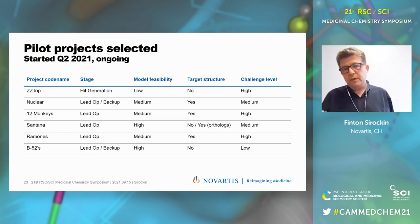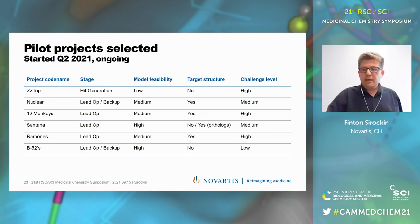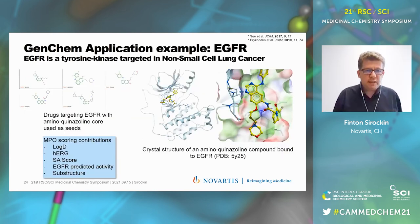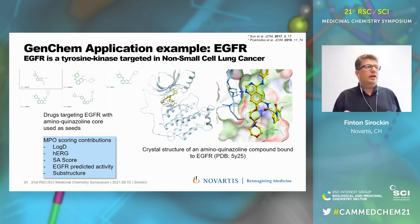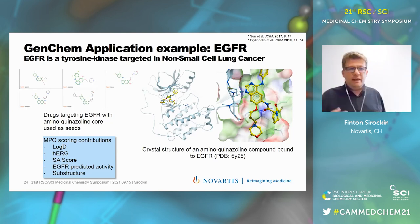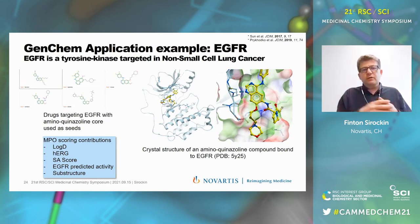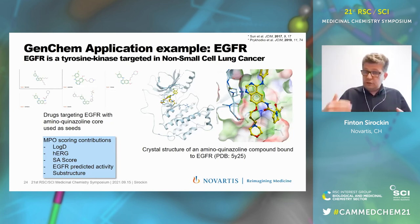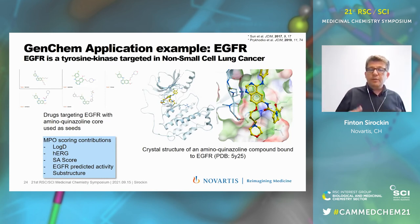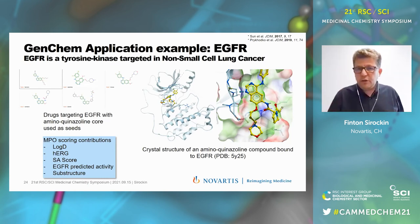Since I cannot show internal examples, I will show an application to public data: EGFR, a tyrosine kinase targeted in non-small cell lung cancer. On the top left, you can see five drugs targeting EGFR — all have an aminoquinazoline core, which we use as a substructure constraint. These five molecules are used as seeds, i.e., starting points in the latent space. The rest of the MPO scoring includes log-D, hERG, synthetic accessibility score, and predicted activity for EGFR. This target has publicly available protein-ligand complex structures including aminoquinazoline compounds, which we use in post-processing to dock all generated molecules.